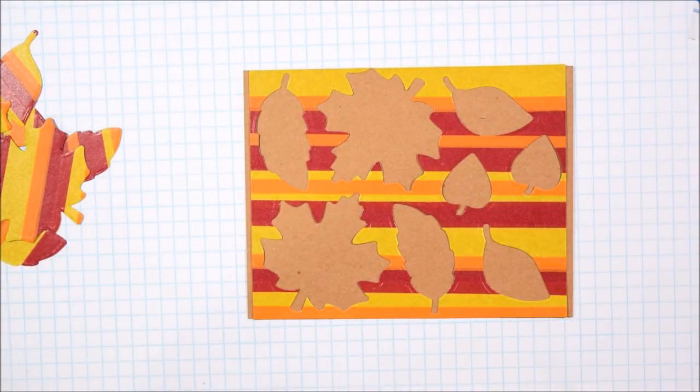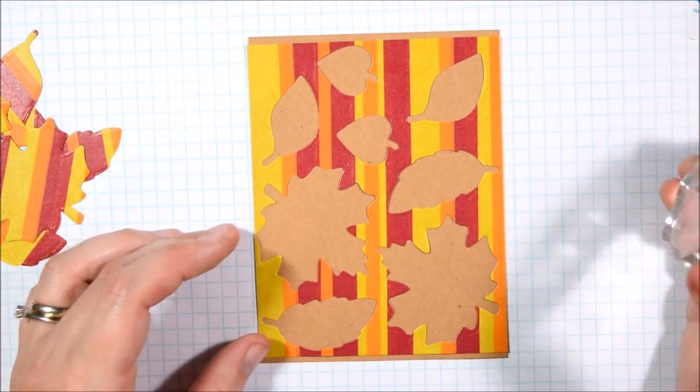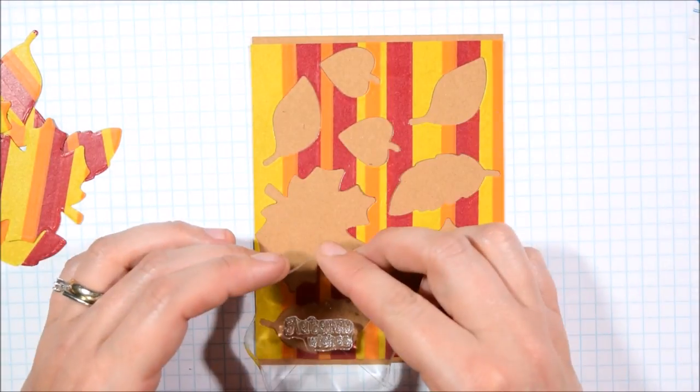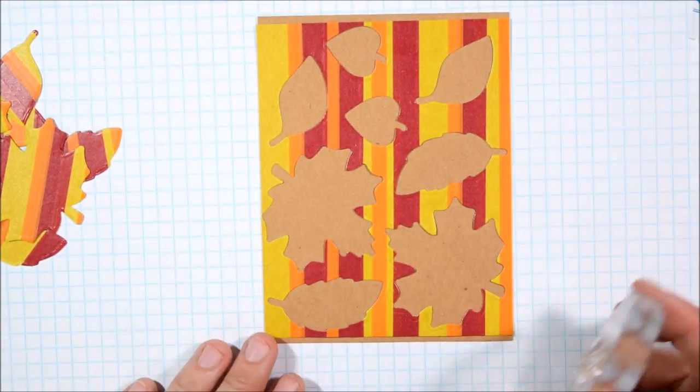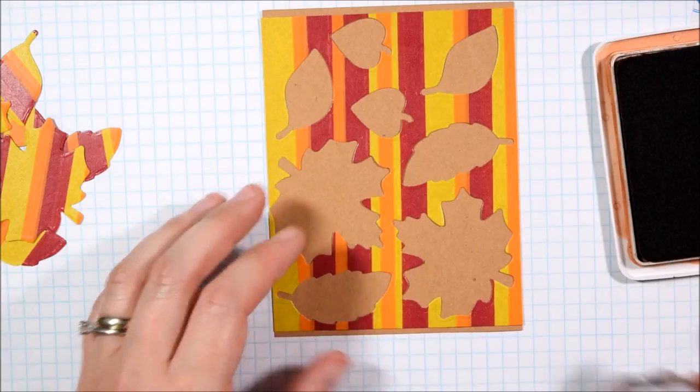Once I have the panel completely secured to the background paper I am ready to do some stamping through the die cut pieces. I knew that I wanted to have the sentiment in one of them and the leaves in the other, so I thought before I stamp anything else I needed to decide where the sentiment is going to go because I need a leaf that will be big enough to hold one of the sentiments from the set.